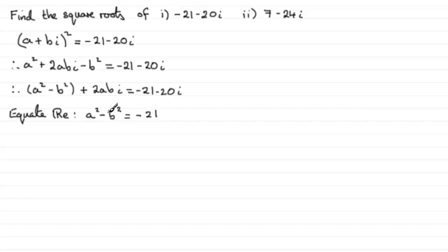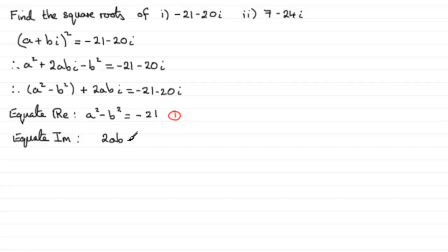We can't solve for a and b from equation 1 alone since we have two variables, so we need a second equation. Equating the imaginary parts — taking just the coefficient of i — we get 2ab equals minus 20. To solve these simultaneous equations, I'll make a the subject. Dividing both sides by 2b gives a equals minus 10 over b. Call that equation 2.